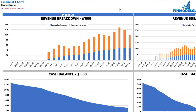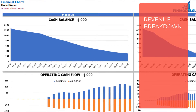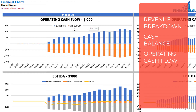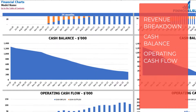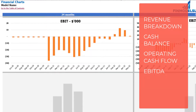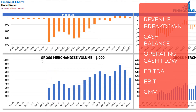On the financial charts tab you may review your main financial KPIs in two sets of charts — 24 months on the left and five years broken down by months on the right. The top charts show revenue breakdown by subscription and commission revenue. The next set shows cash balance by month, followed by operating cash flow broken down by cash inflow and outflow. Then there is an EBITDA breakdown chart showing revenue, COGS, and OpEx with EBITDA as a yellow line, an EBIT chart, and finally gross merchandise volume by month.